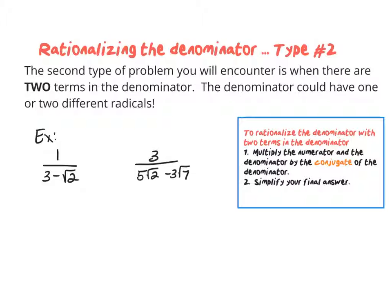The second type of problem you'll see when rationalizing denominators is when there's two terms in the denominator. You can have just one square root in the denominator or two separate square roots — it doesn't really matter, as long as there are two terms and at least one radical. When we have a problem like this, we need to multiply the top and the bottom by something called the conjugate.